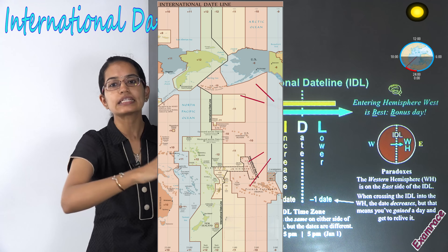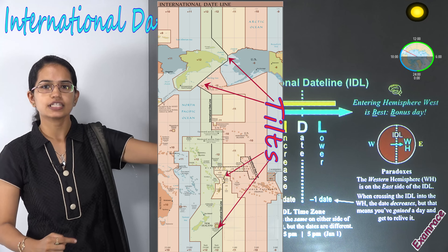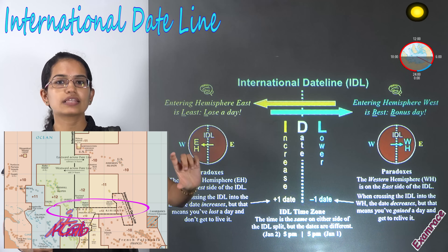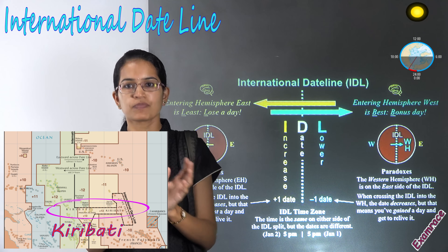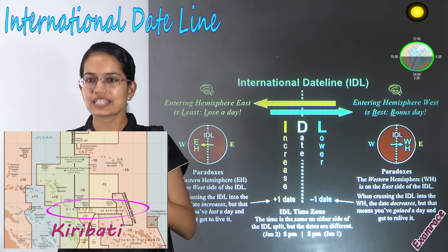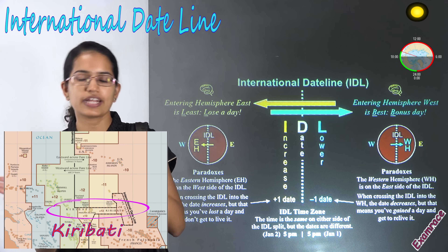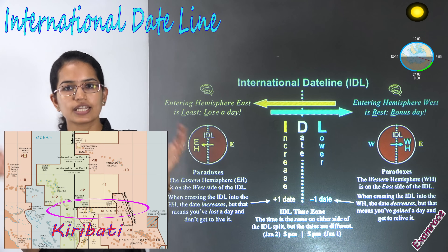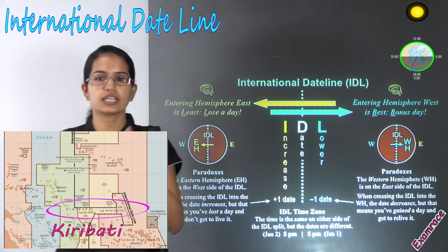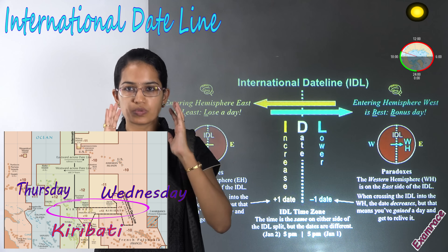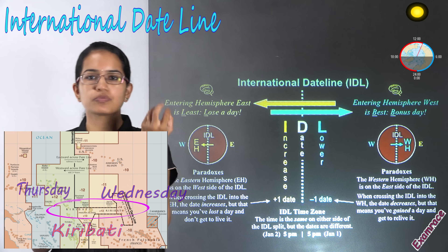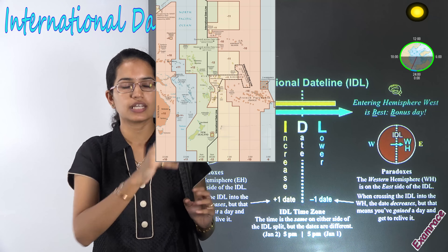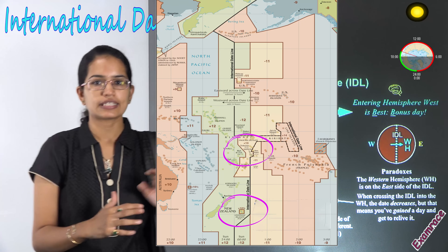On the map you can see there are many tilts in the international date line. It has a tilt at the Bering Strait. Again, in the lower sections, you can see Kiribati. Kiribati basically has 33 groups of islands. They were divided into two different date zones as per the IDL — some were on the east of IDL, others on the west. So both were following different dates. They wanted all island groups to be under one date period, so they shifted in 1995.